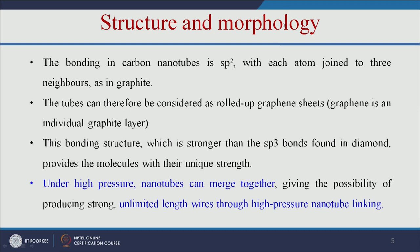The bonding in carbon nanotubes is sp2, with each atom joined to three neighbours as in graphite. The tubes can therefore be considered as rolled-up graphene sheets, and this bonding structure is stronger than the sp3 bonds found in diamond. Under high pressure, these nanotubes can also join together to form a nanowire.